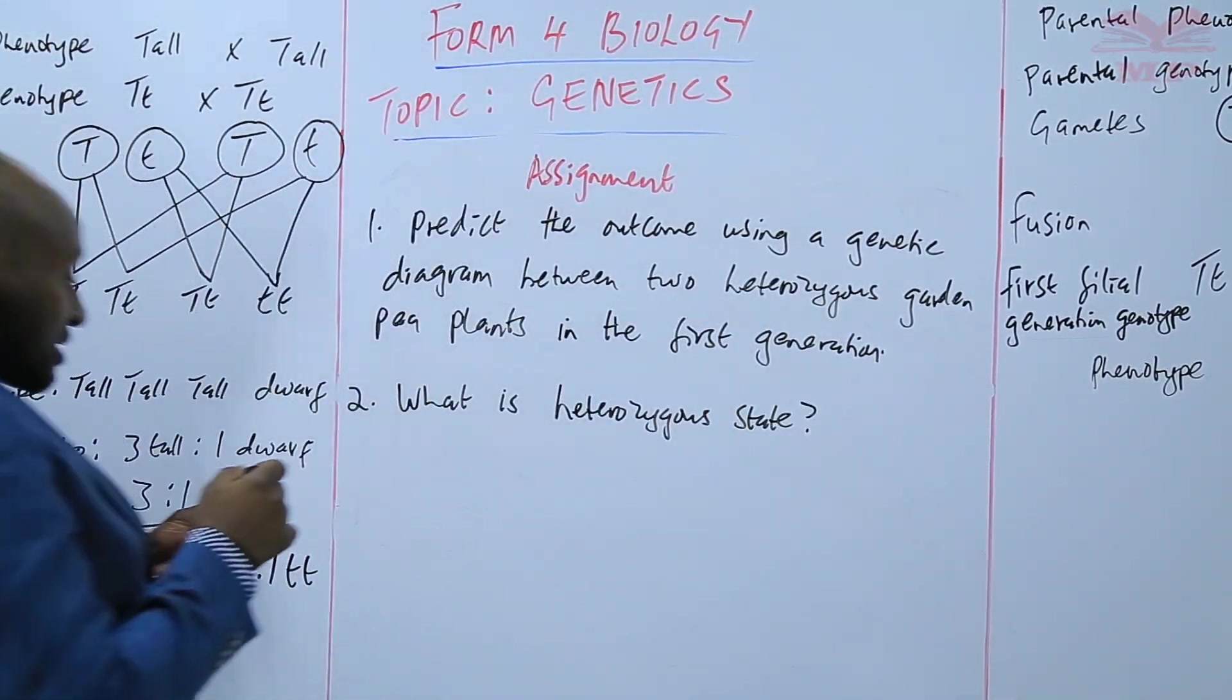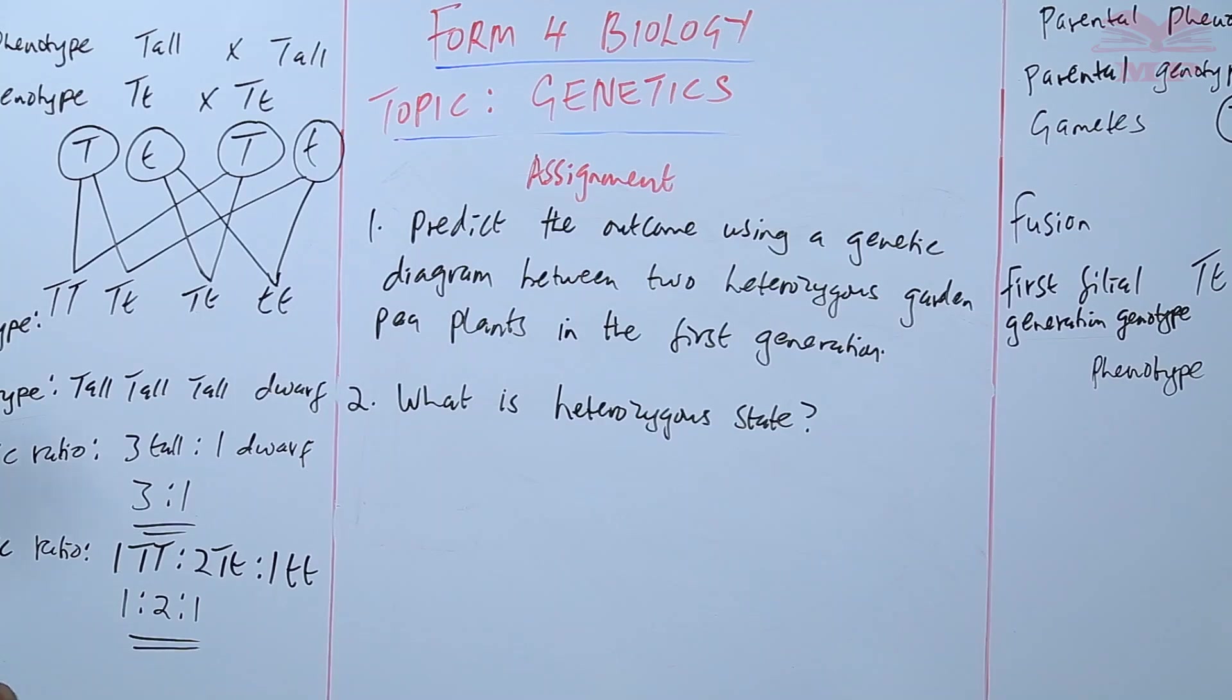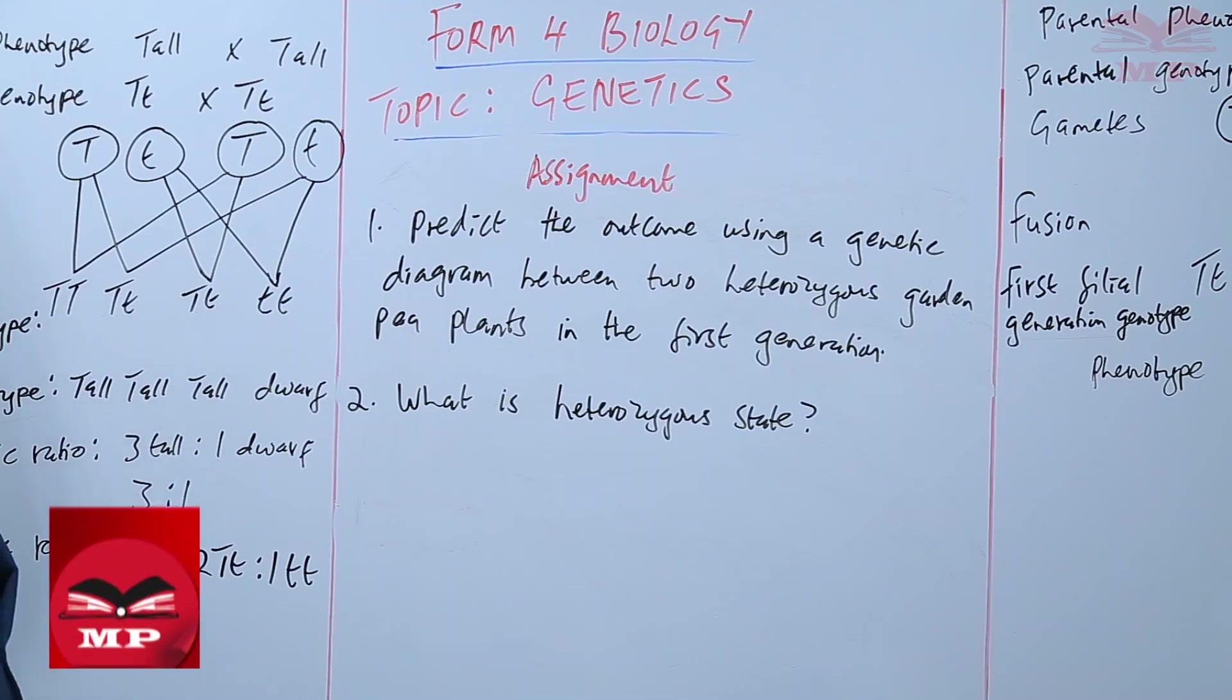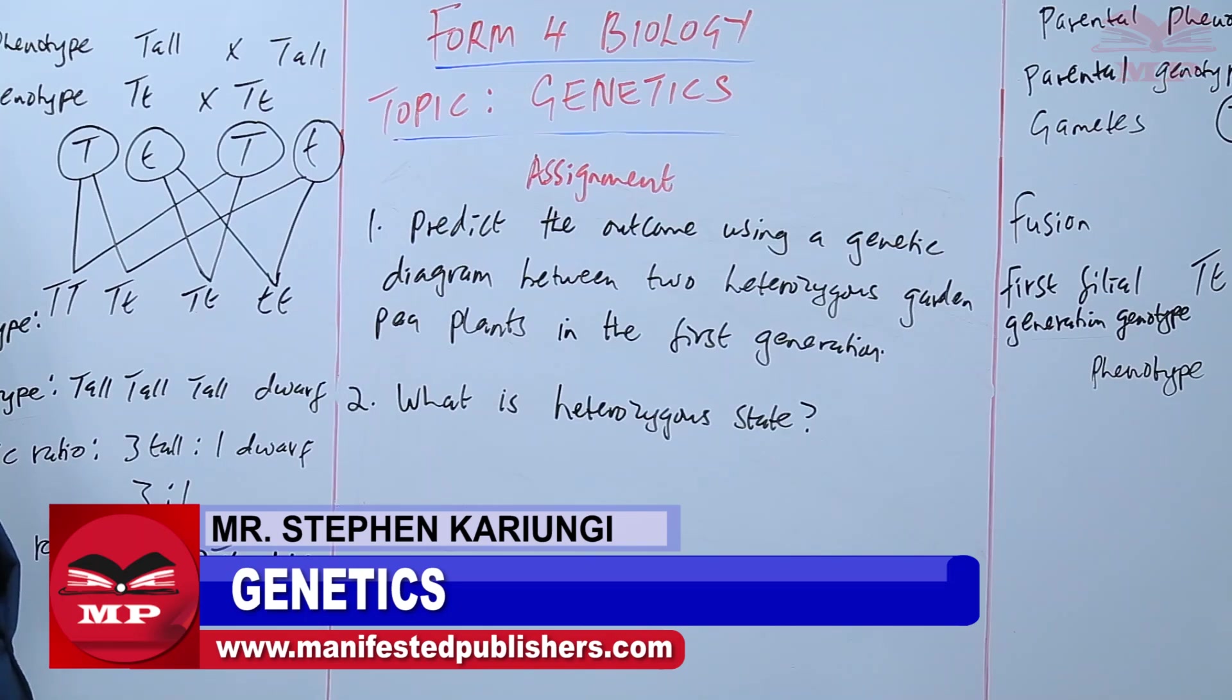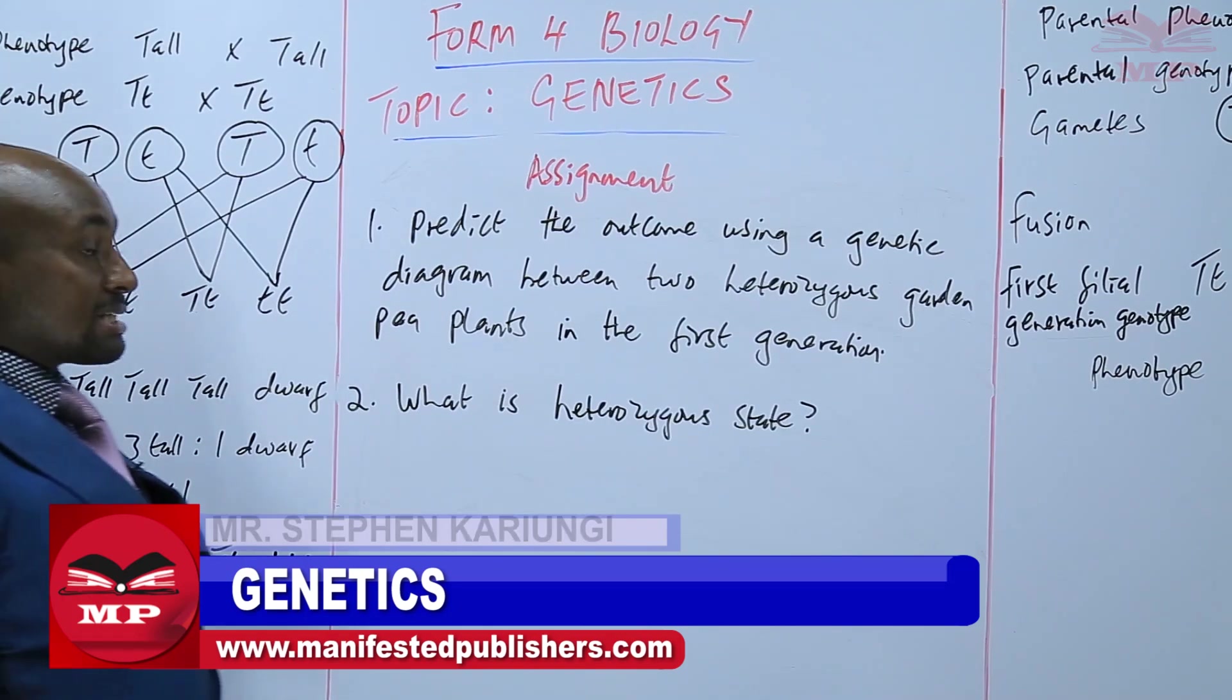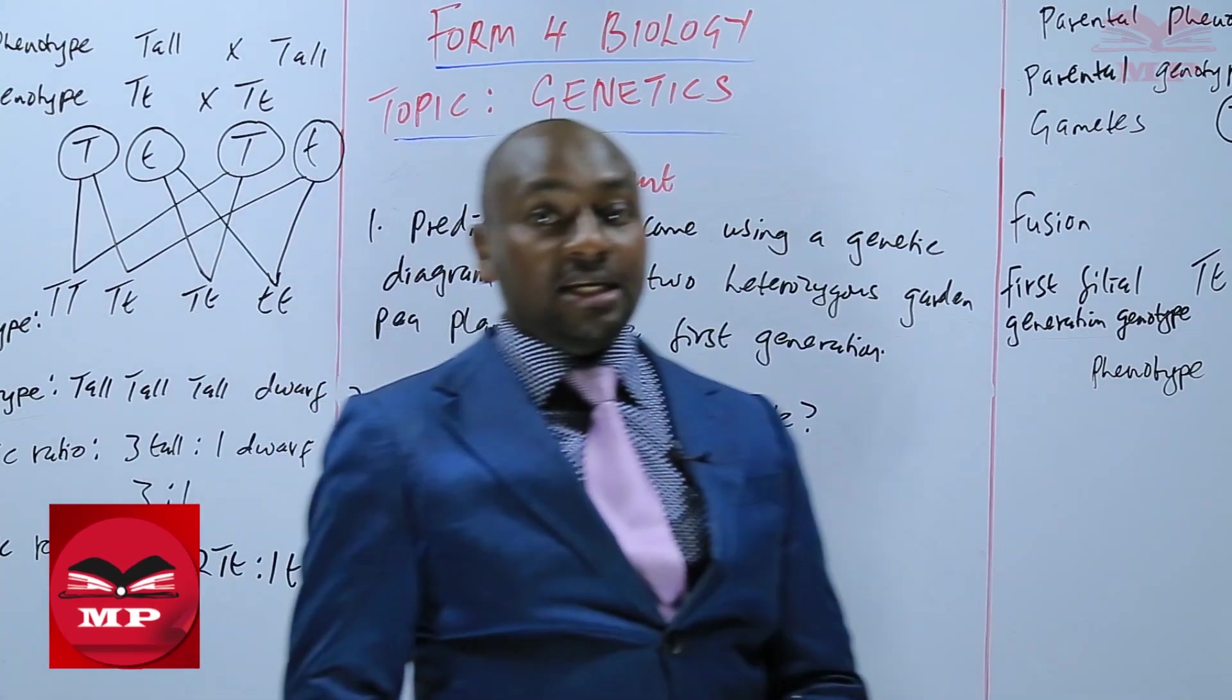The assignment: Number one, predict the outcome using a genetic diagram between two heterozygous garden pea plants in the first generation. Then two, what is heterozygous state? We'll stop there until next time, goodbye.